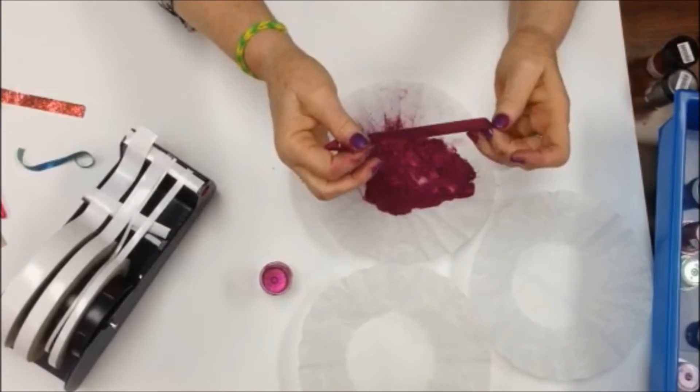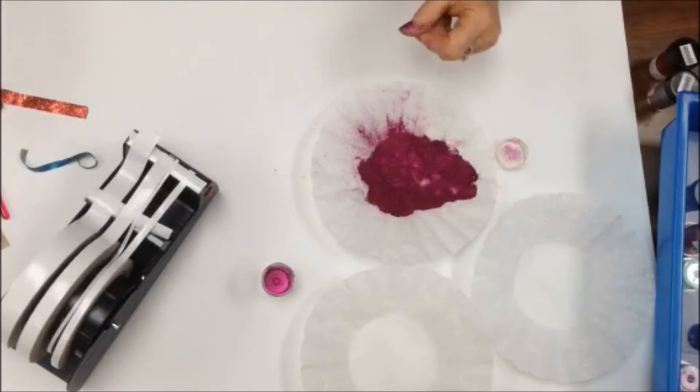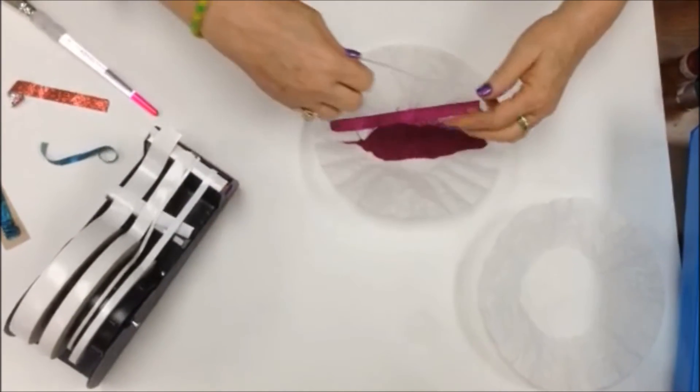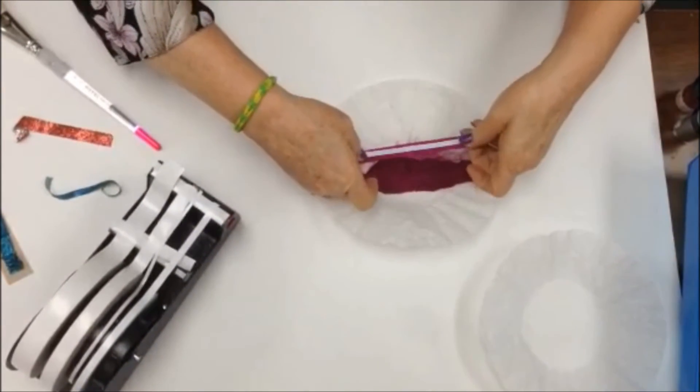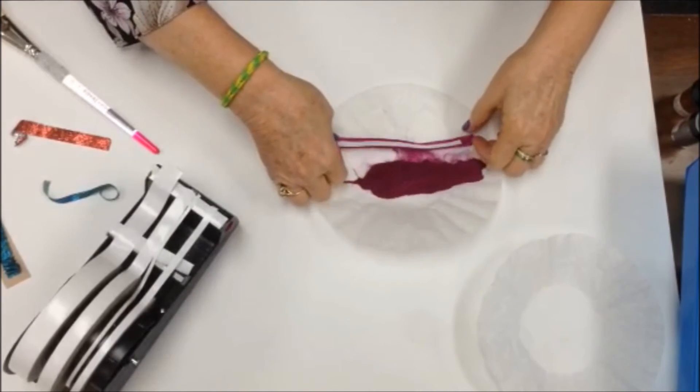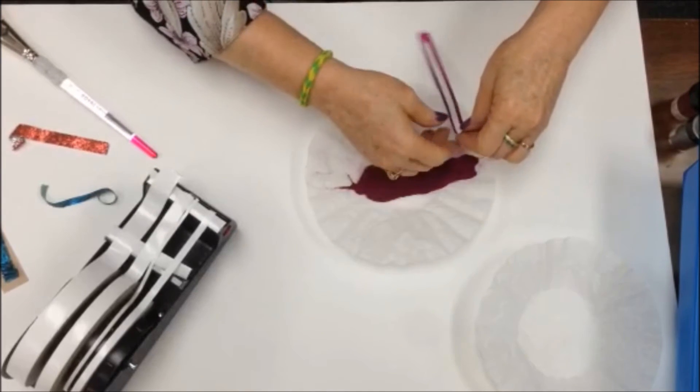But maybe you want to have more body to the ribbon. In that case, if you wanted it to be more sturdy so you can make a stronger bow, then you would just apply another piece of tape narrower than the first one, because it would be really hard to fit the same size directly over what you've already done.